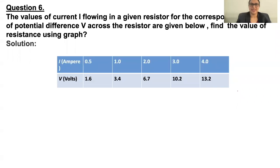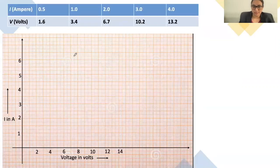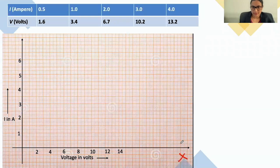Question number six: the value of current I flowing in a given resistor for the corresponding values of potential difference V across the resistor are given below. Find the value of resistance using a graph. So we have I and voltage given, and we have the graph sheet here. We need to set up the x-axis and the y-axis.